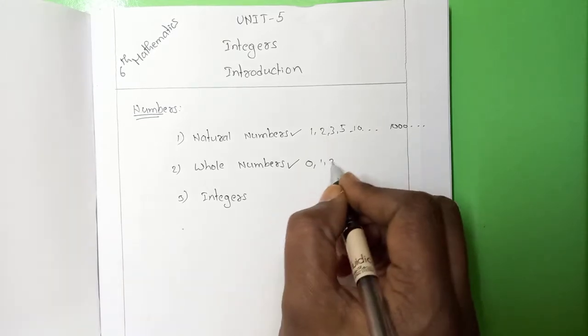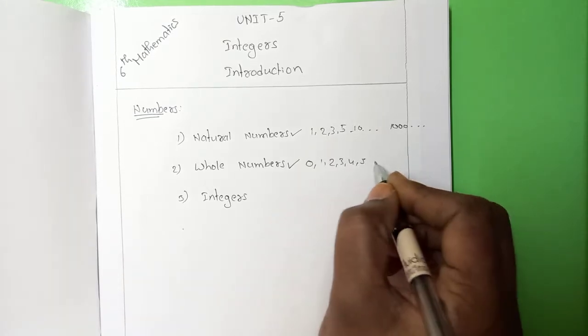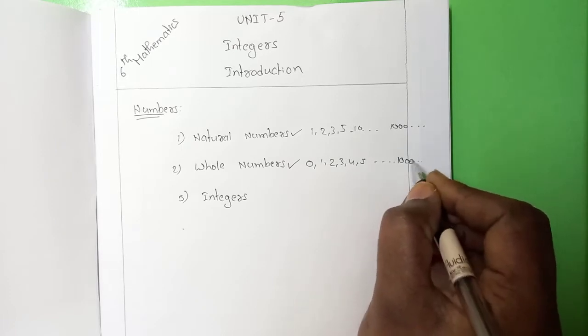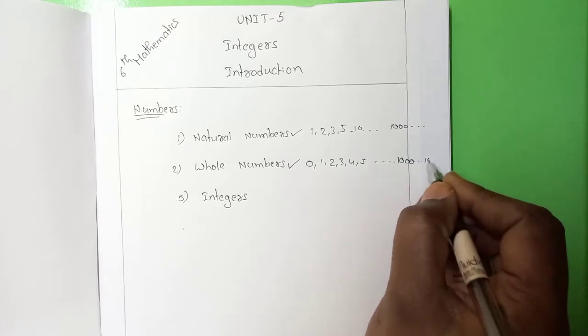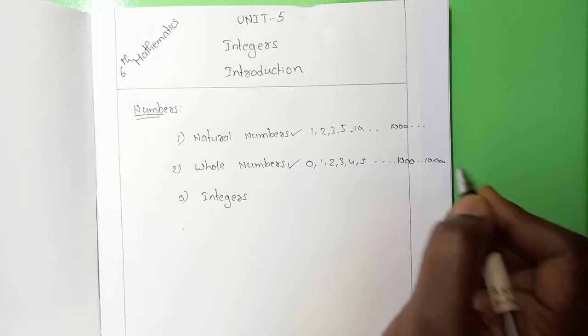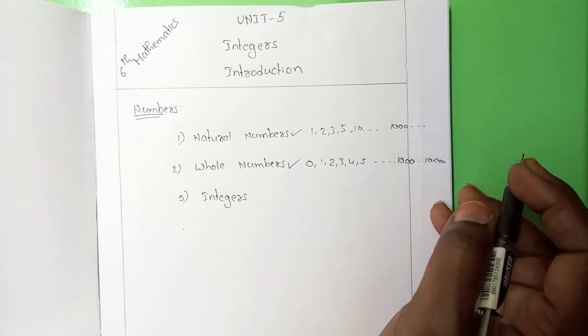Whole numbers: 0, 1, 2, 3, 4, 5 and so on — 1000 and so on, up to 10 lakhs, crores. Everything is a whole number.